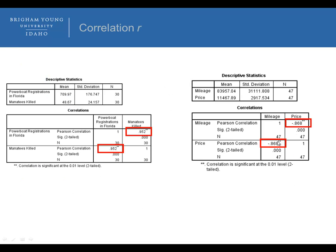Now take a look at this value of R comparing mileage and price — tell me what you see. Is the relationship strong? Is it positive? Is it negative? Well, since this value has a negative sign and it's close to 1 in magnitude, the direction is negative, and since it's close to negative 1, it's going to be fairly strong as well — not as strong as the manatee example, but still fairly strong.